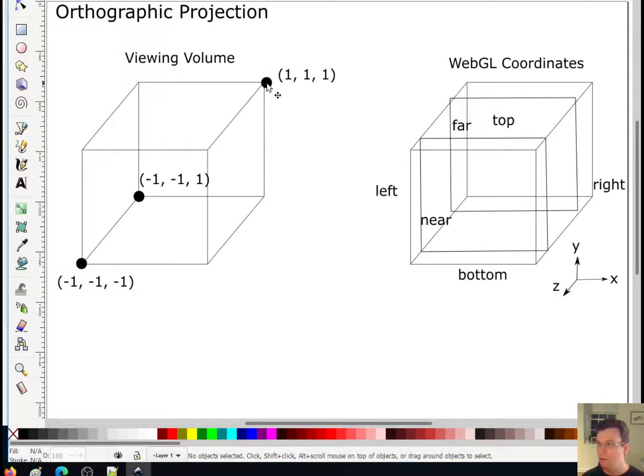And so my goal is going to be to take this volume, so let me draw all the vertices on this rectangular prism here. So I'm going to want to take this volume and stretch it or squash it. So it's a volume between these eight vertices between the left, right, top, bottom, near and far, and stretch it and squash it until it fits into this viewing volume. So that's what I'm going to do.